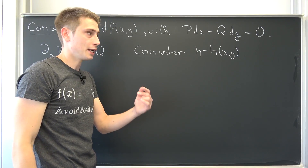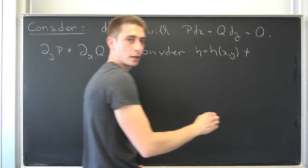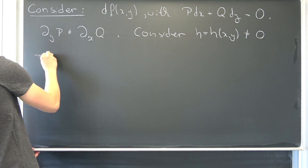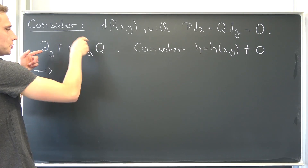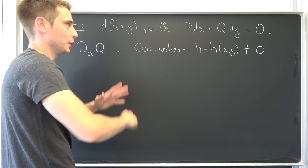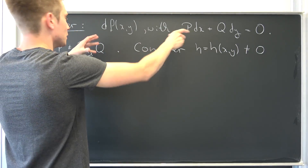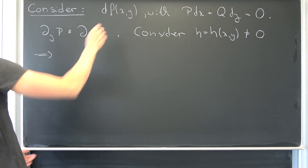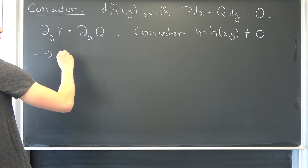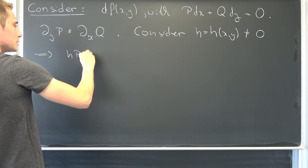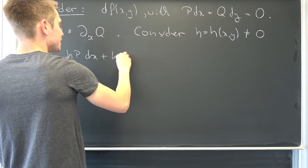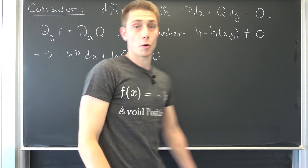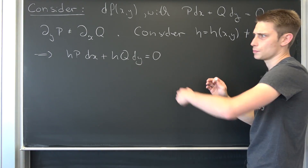What does it mean for H? We don't want it to be equal to zero, otherwise you can't multiply by it. So with the equation being inexact, we are going to multiply both sides, meaning we are going to have H times P dx plus H times Q dy equals zero. We want this differential equation to be exact.